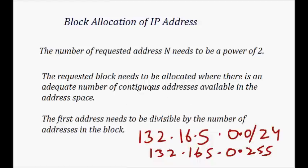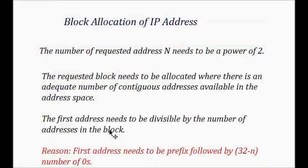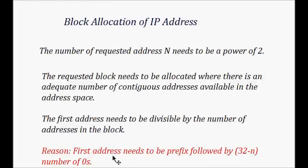The first address needs to be divisible by the number of addresses in the block. The reason is that the first address needs to be the prefix — it should have all zeros after the prefix bits. So the prefix followed by (32 − n) zeros needs to be the first address, meaning it must be divisible by the number of addresses in the block.